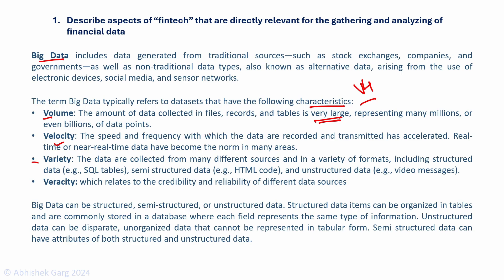Second, velocity: the speed and frequency with which data is recorded and transmitted has accelerated in recent times. Real-time and near real-time data is becoming the norm — for example, in stock exchanges, real-time data is much preferred over past data. Third, variety: data is collected from many different sources and in a variety of formats, including structured, semi-structured and unstructured data. Fourth, veracity: veracity refers to the credibility and reliability of different data sources. Since big data is collected from many different sources, we must ensure the data collected is reliable.